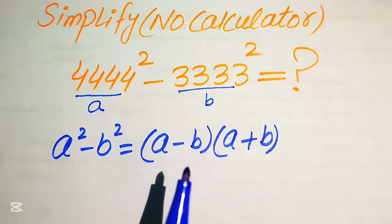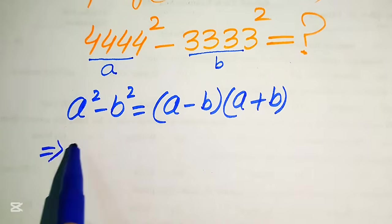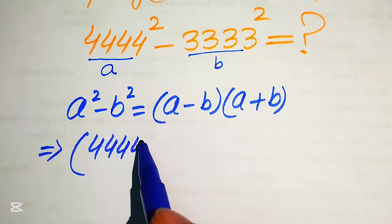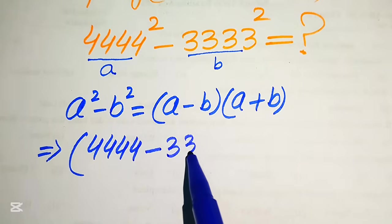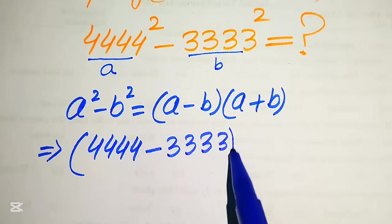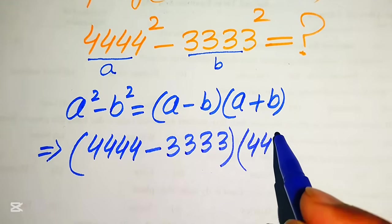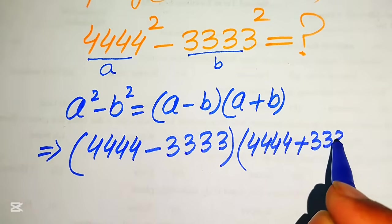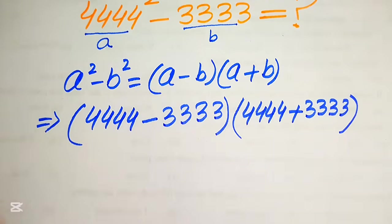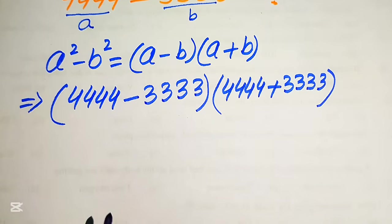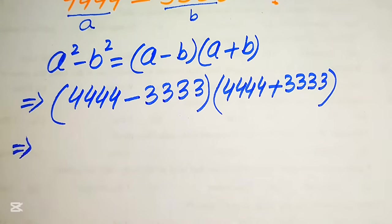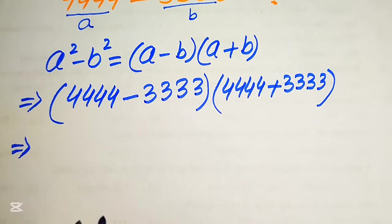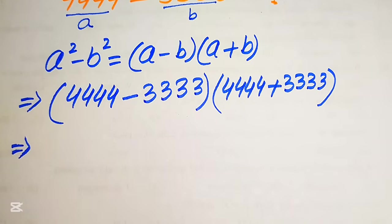According to this formula we will write our above algebraic expression as in this form. First we will write here 4444 minus 3333 into, here we have 4444 plus 3333. Because we write our answer into the simplified form and now here we will convert our given expression into the lowest form so that we need the less calculation to find our desired result.